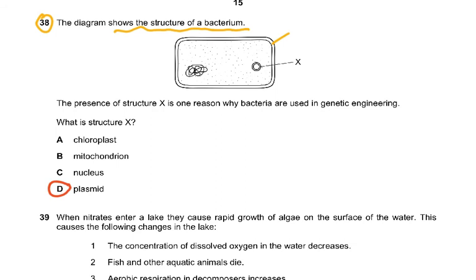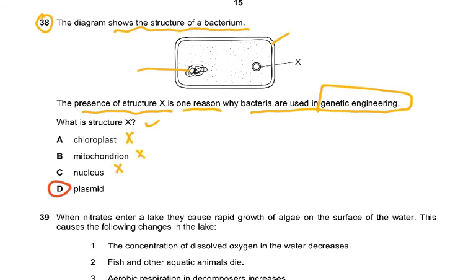Question 38: the diagram shows the structure of a bacterium — cell wall, cell membrane, cytoplasm, and circular DNA. Structure X, which is used in genetic engineering, is a plasmid. Remember: bacteria are prokaryotes with no nucleus, no mitochondria, and no chloroplasts. They have no membrane-bound organelles — nucleus, mitochondria, and chloroplasts are all membrane-bound.